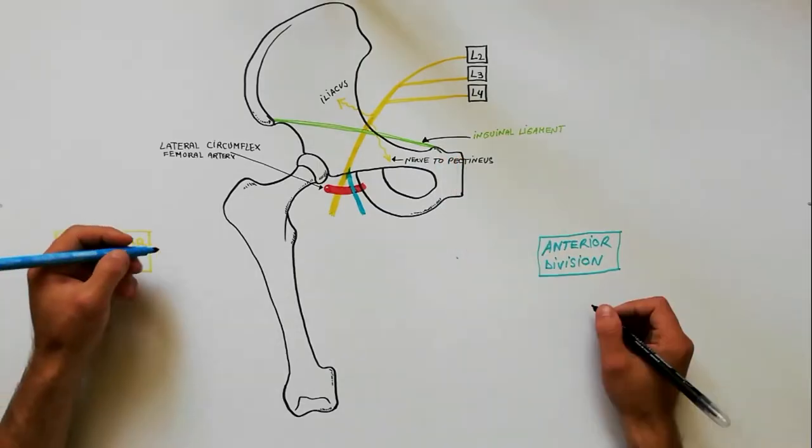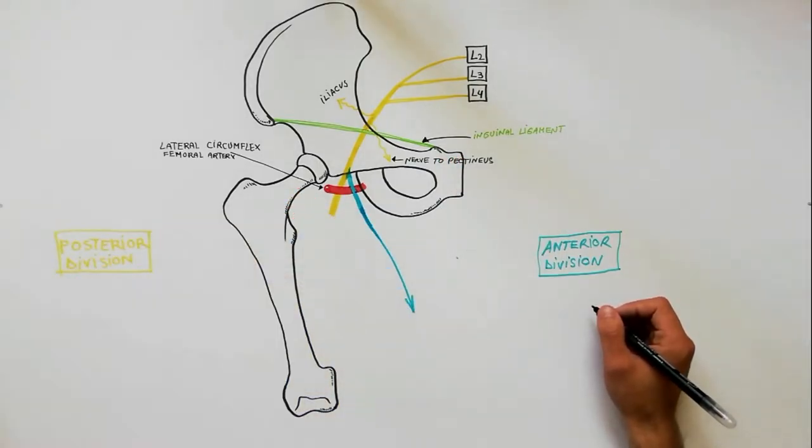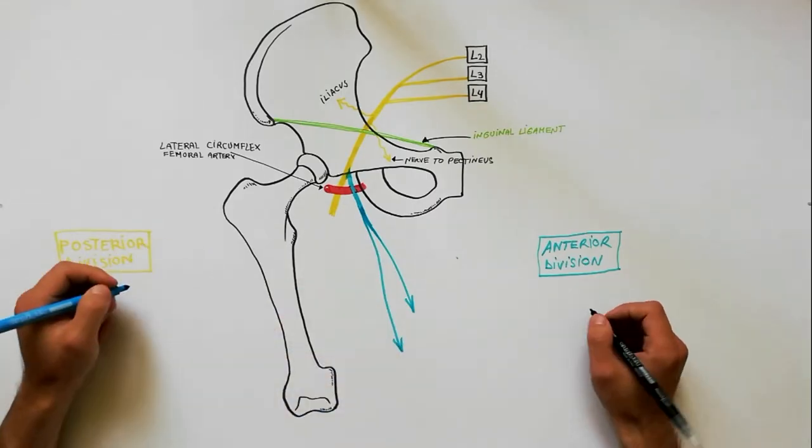The anterior division gives off two cutaneous branches and one muscular branch.